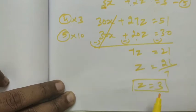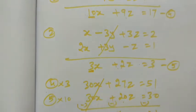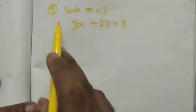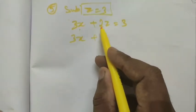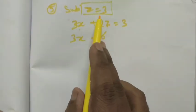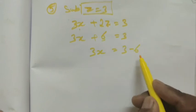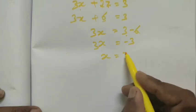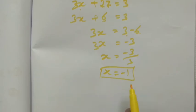z is equal to 3. Now substitute z equals 3 into equation 5: 3x plus 2z equals 3, so 3x plus 2 into 3 equals 3, giving 3x plus 6 equals 3. Then 3x equals 3 minus 6, which is minus 3. So x equals minus 3 divided by 3, giving x equals minus 1.